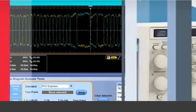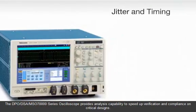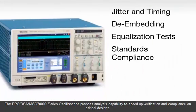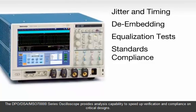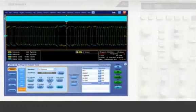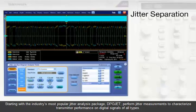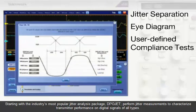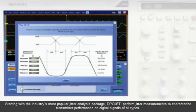The DPO-DSA MSO 70,000 Series Oscilloscope provides analysis capability to speed up verification and compliance on critical designs. Starting with the industry's most popular jitter analysis package, DPO-JET, perform jitter measurements to characterize transmitter performance on digital signals of all types.